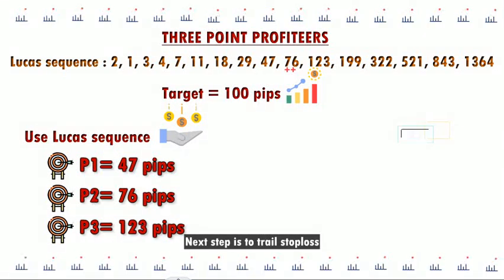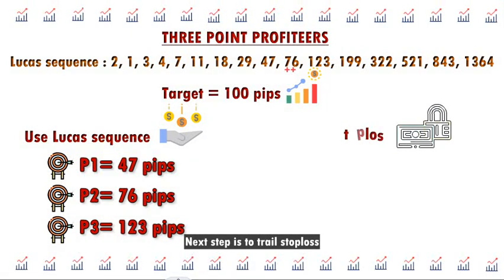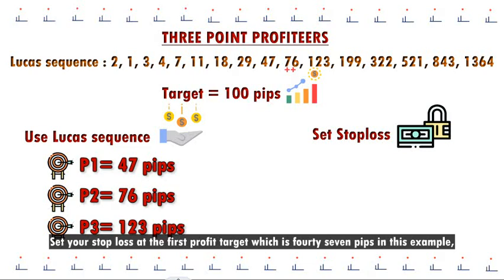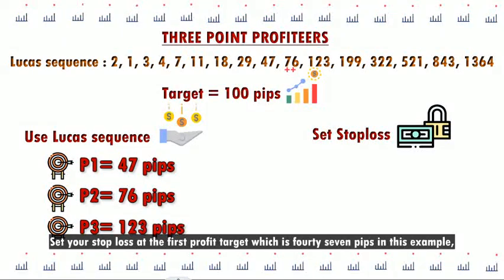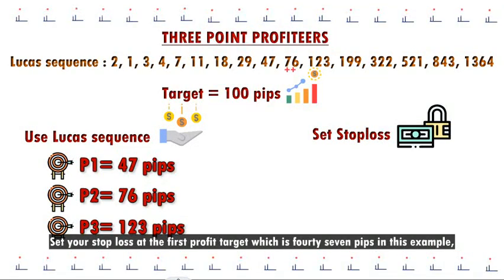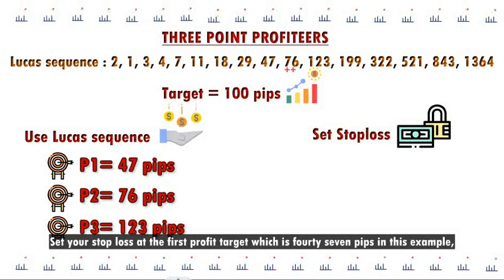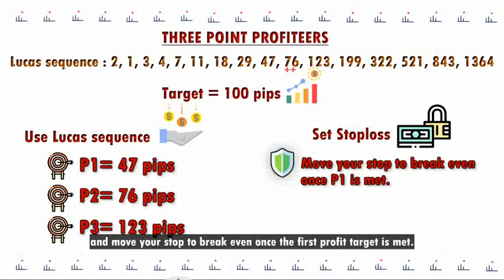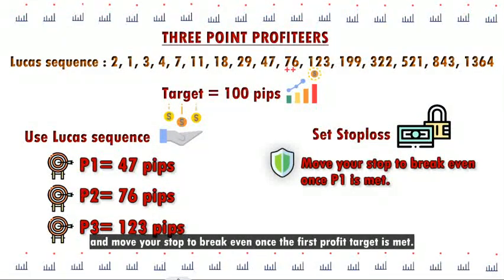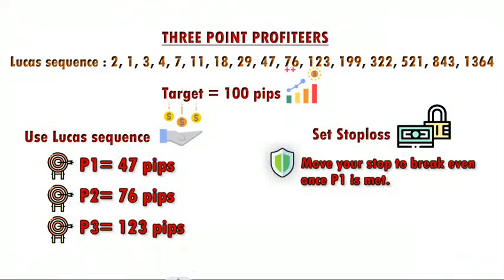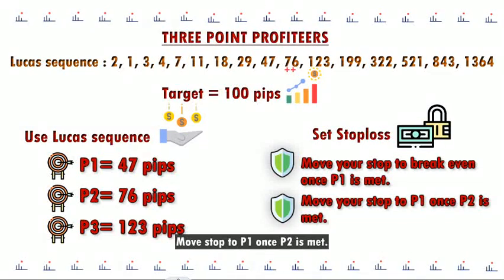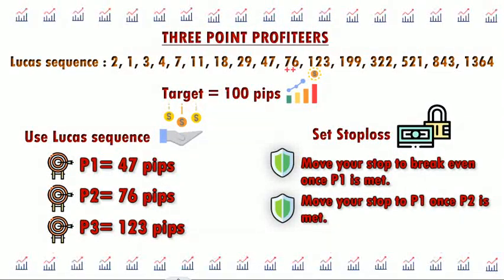The next step is to trail the stop loss. Set your stop loss at the first profit target, which is 47 pips in this example, and move your stop to break even once the first profit target is met. Then move your stop to P1 once P2 is met.